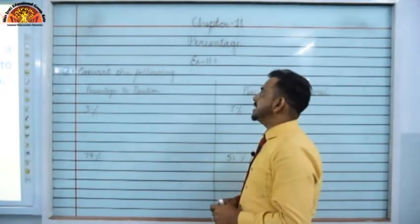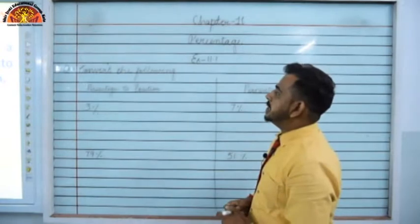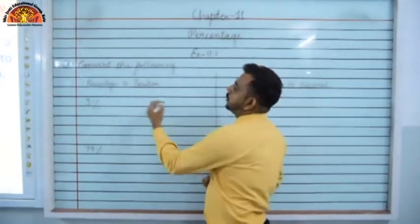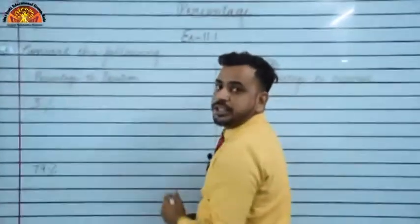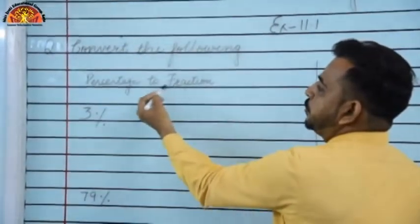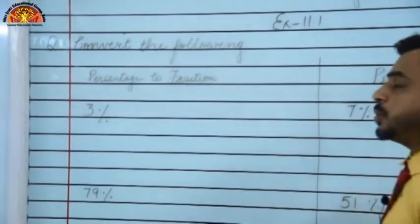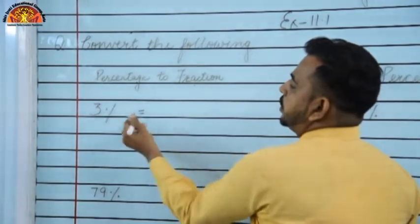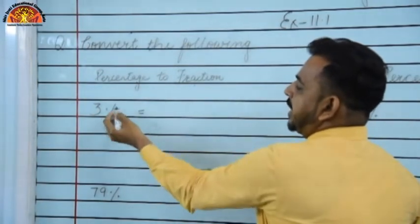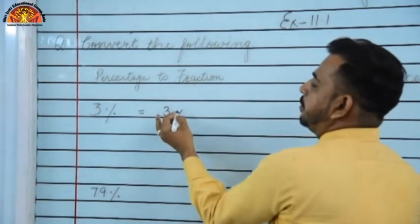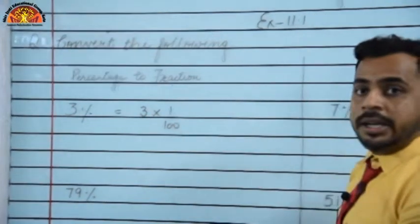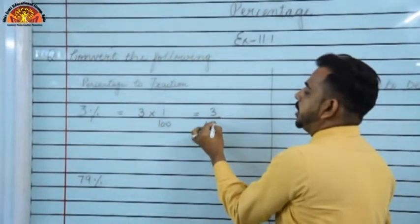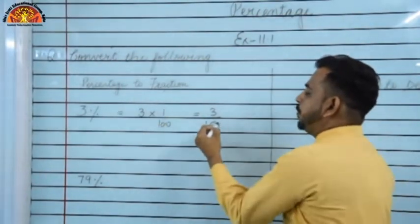Now let us start Exercise 11.1 and discuss question numbers 3 and 4. Convert the following percentages to fractions. First, 3%: remove the percentage sign and multiply by 1/100 → 3 × 1/100 = 3/100. This is the answer.